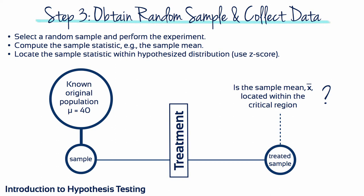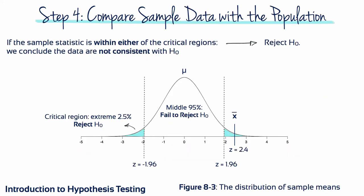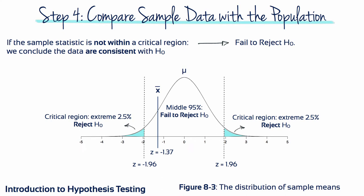Step 3 in the process of hypothesis testing is where we actually select a random sample and perform the experiment. If the mean from the sample data is located in either of the critical regions, we reject the null hypothesis and conclude the data are not consistent with the idea that nothing meaningful happened. On the other hand, if our sample mean is not within a critical region, we fail to reject the null hypothesis and conclude the data are consistent with the idea that nothing meaningful happened. The apparent difference between our sample mean and the population mean is simply due to random variation or chance occurrences — there's nothing systematic or meaningful behind it.